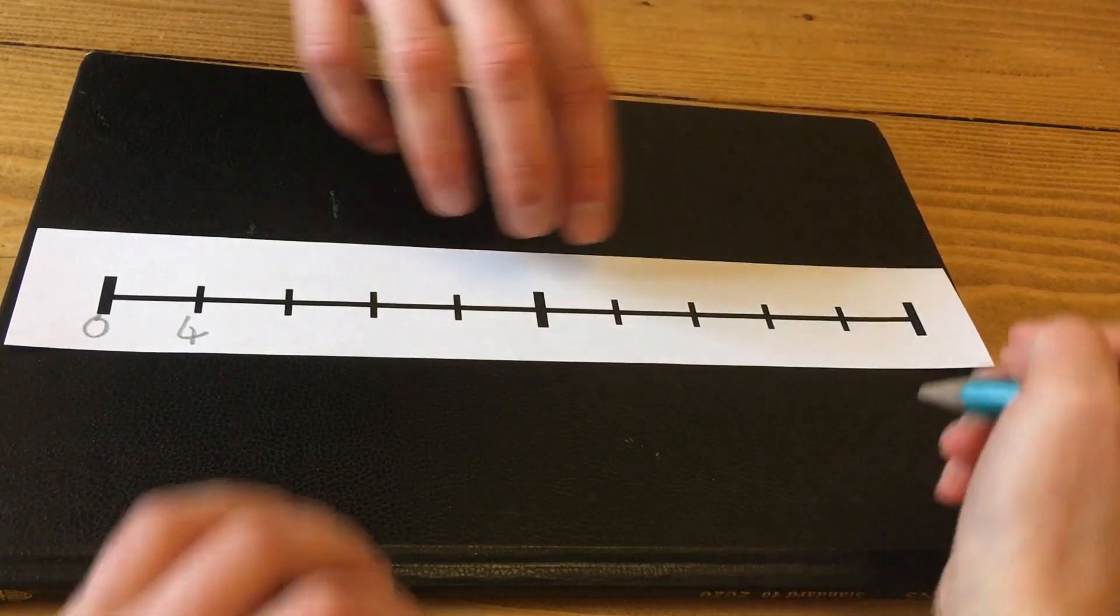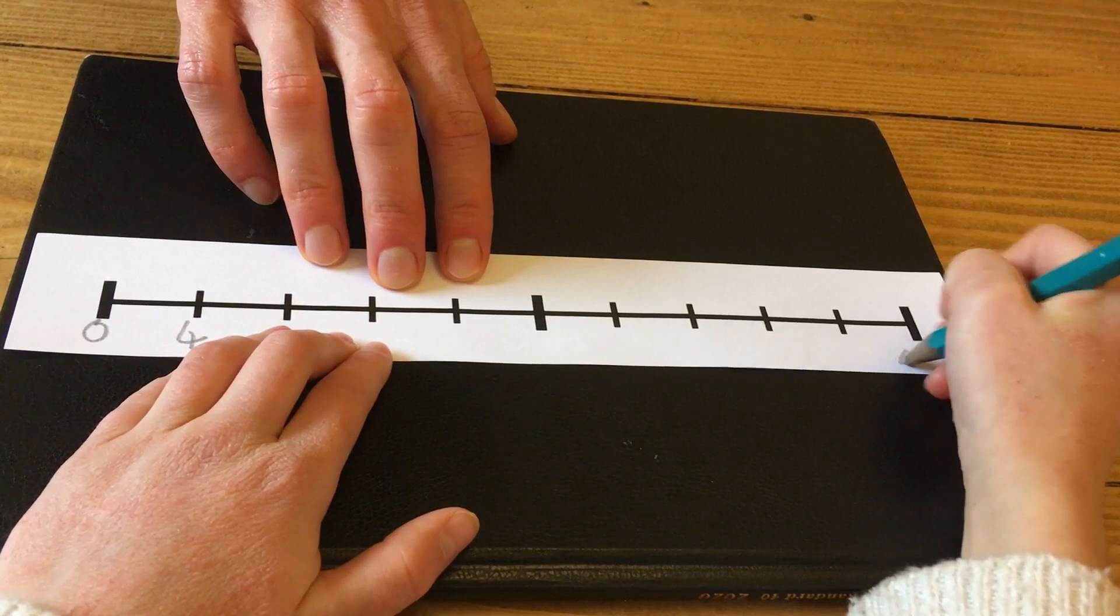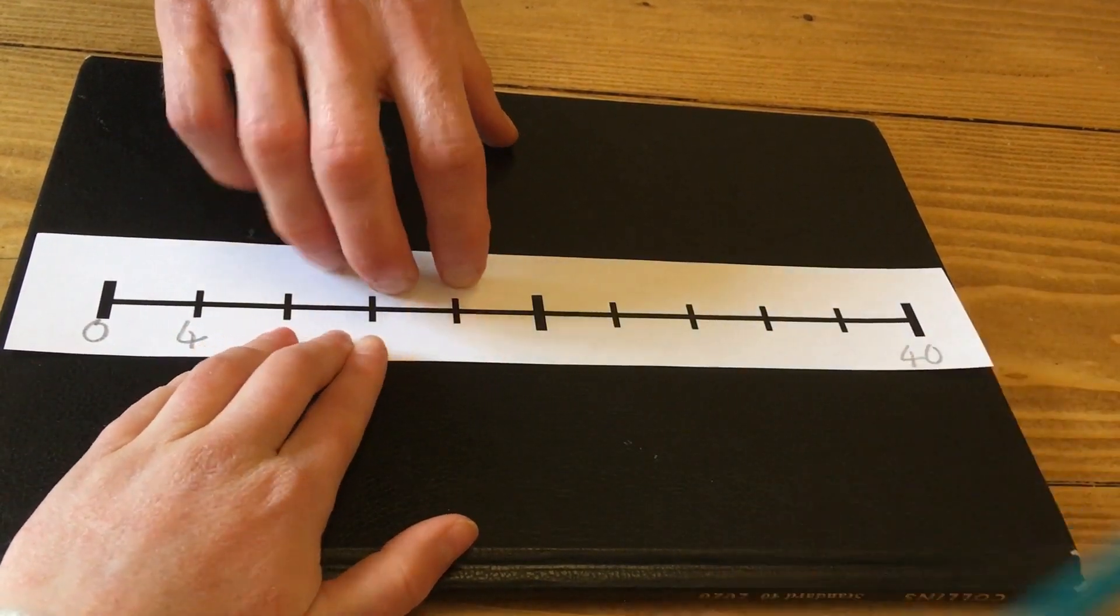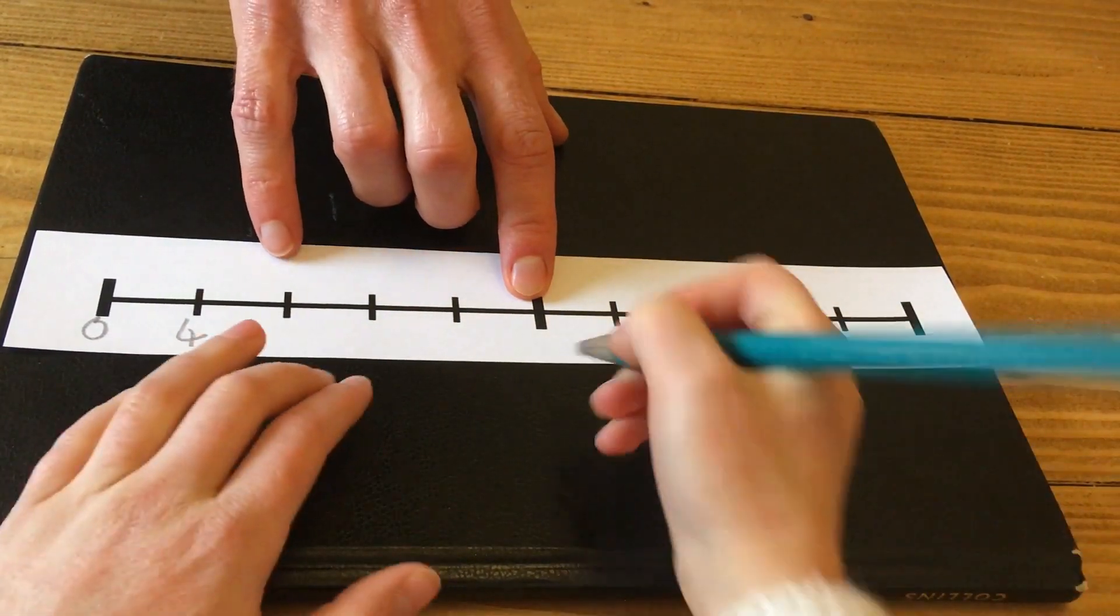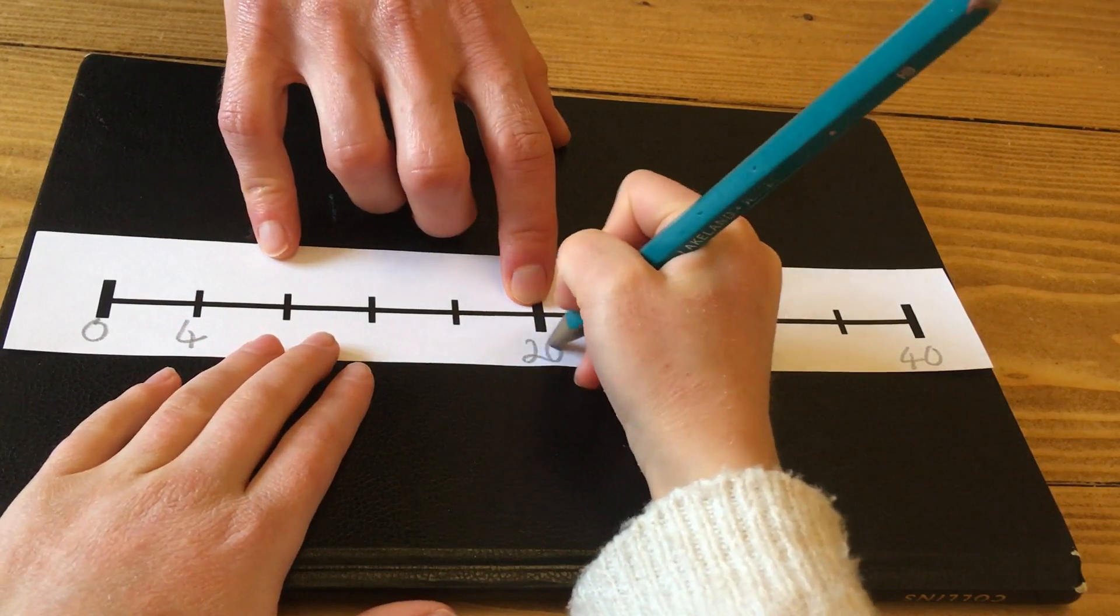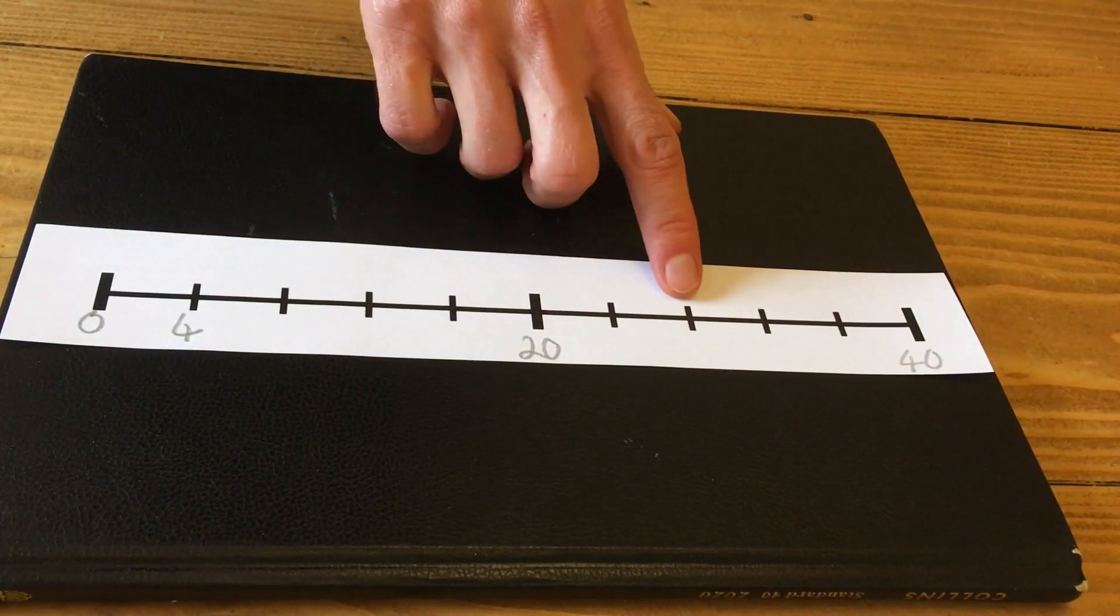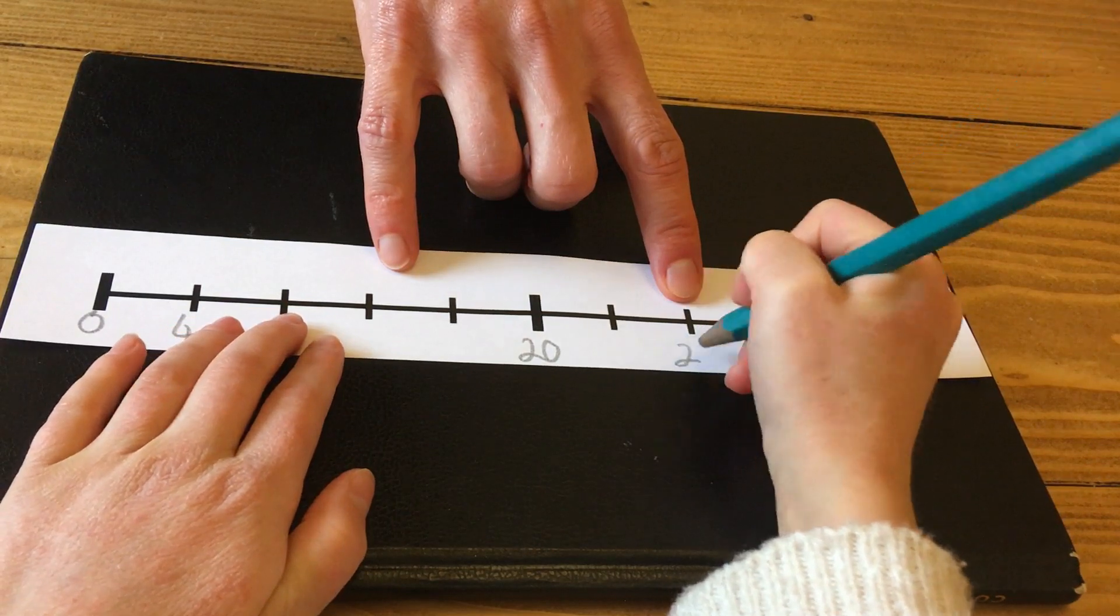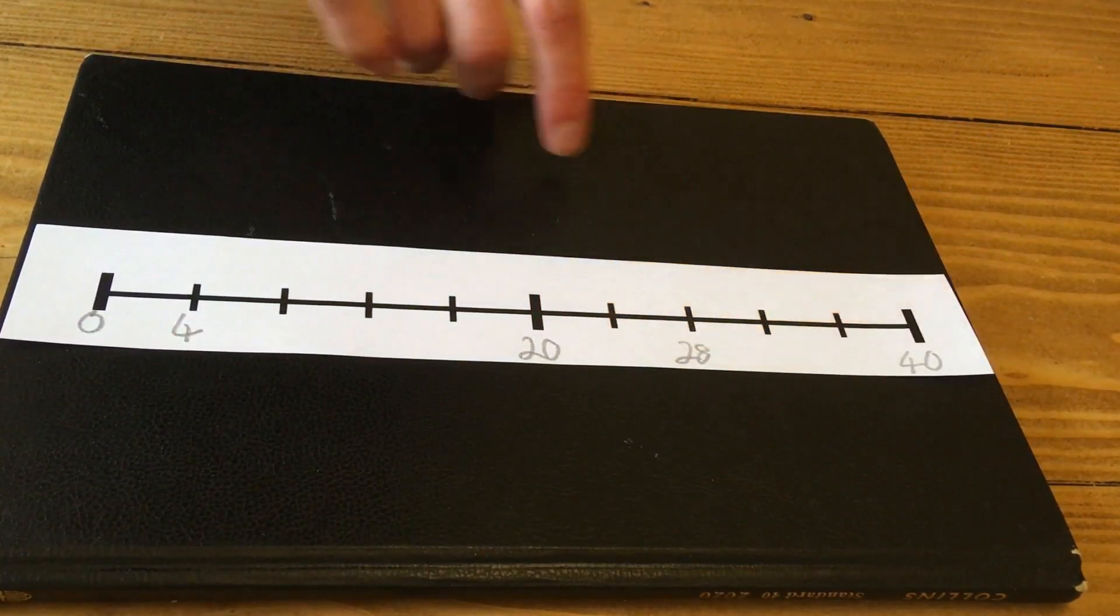So what's this one? Forty. Forty, how do you know? It is ten times four. This one? That's twenty, half of forty. And what about that one? That one is seven times four, which is twenty-eight. Eight more than twenty, yeah, good.